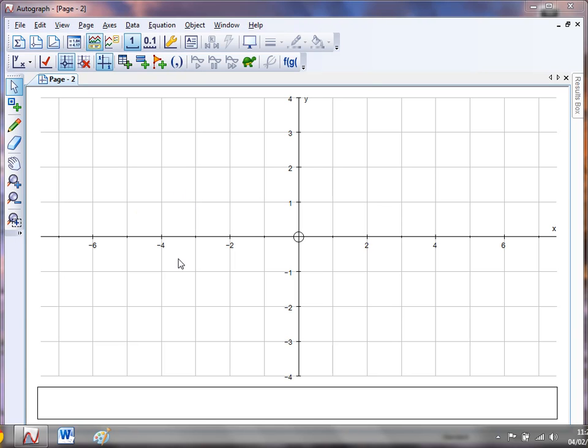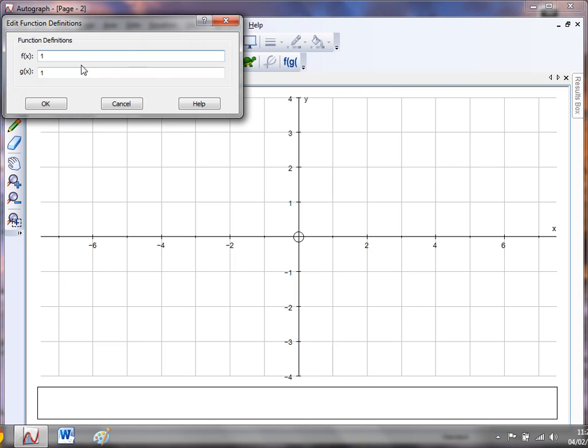Now I've just opened Autograph in standard mode, not done a single thing here. To enter a function on Autograph it's this little button up here, your FG button. If I just hover over there, function definitions, so you can define your function to be whatever it is.